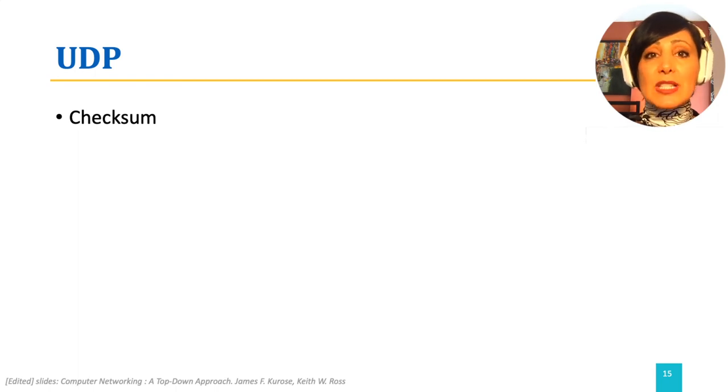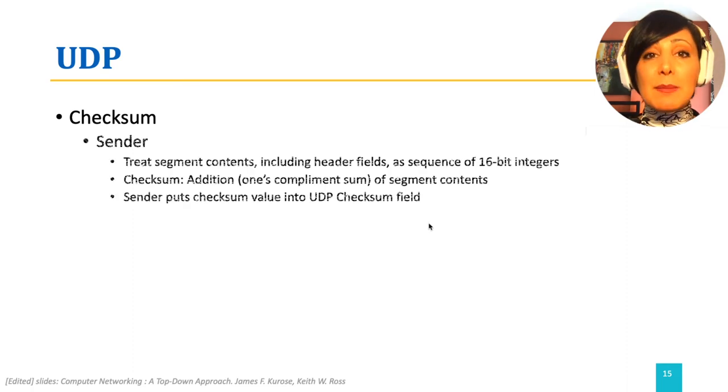We saw UDP has a very simple header. One of UDP header fields is checksum. Checksum implements a simple error detection mechanism.